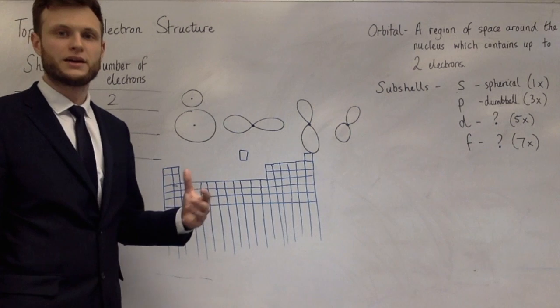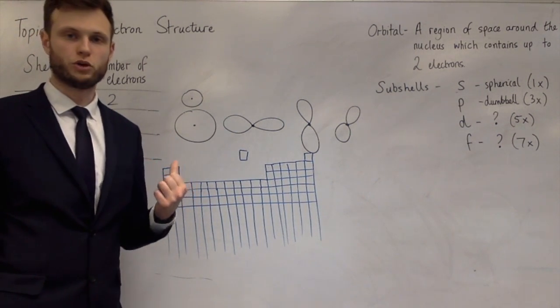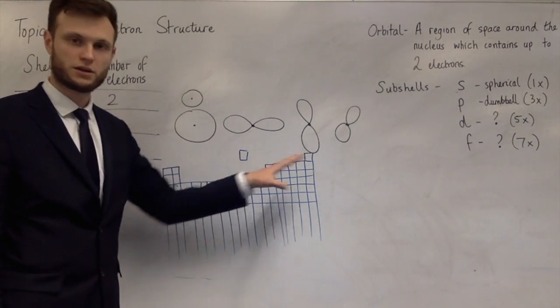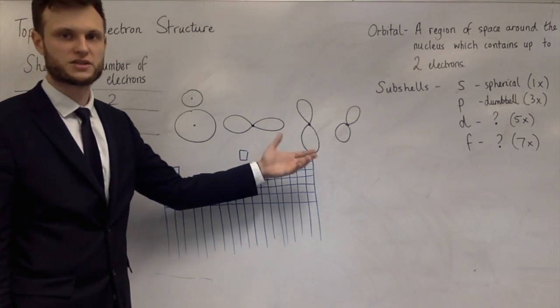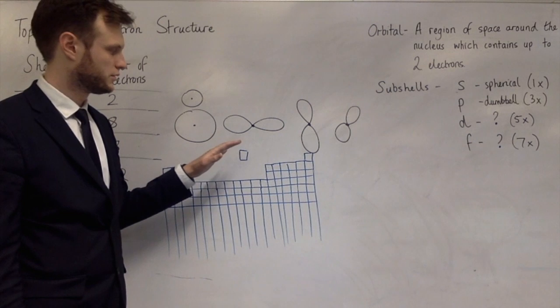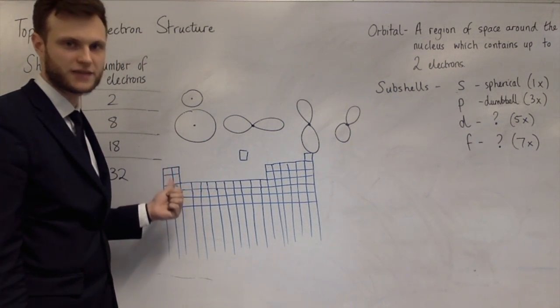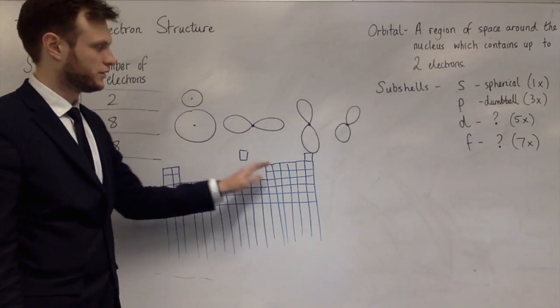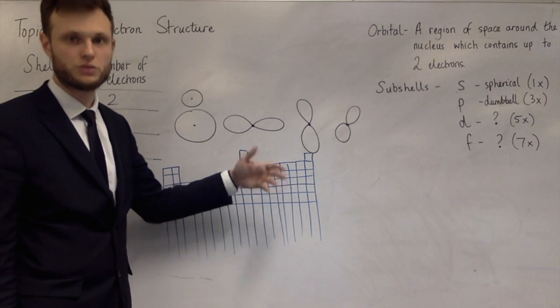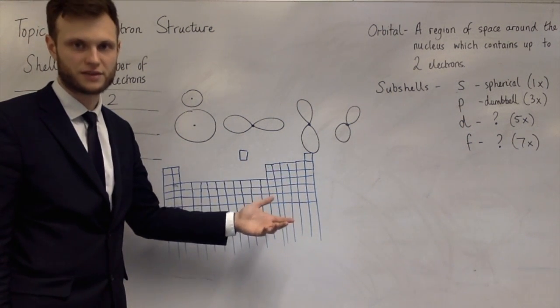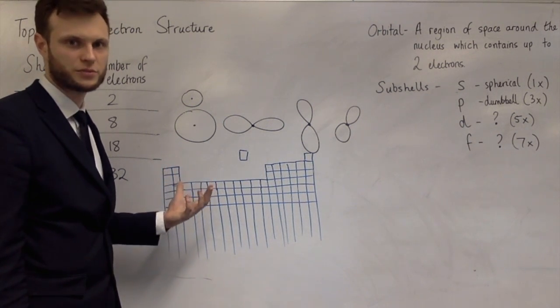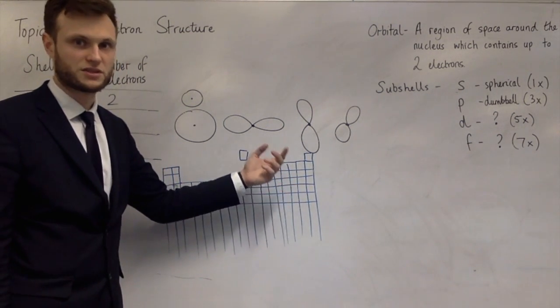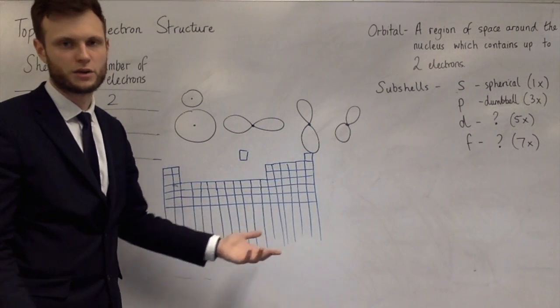And the order in which the electrons fill the orbitals is the order of the periodic table. So the first two go into the first S subshell, the next two go into the second S subshell, the next six go into the P subshell in the second shell, the next two go into the third S subshell, the next six go into the second P subshell, and so on and so on.